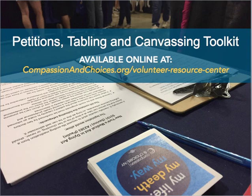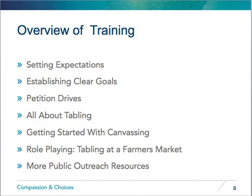Before we get any further, let's review the objectives of this session. By the end of this training you'll have really clear expectations and clear goals. You'll know what petition drives are, you'll know all about tabling, you'll know how to get started with canvassing, we'll do a role play where we're tabling at a farmers market, and we'll connect you to additional public outreach resources.